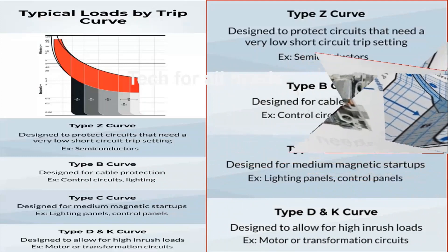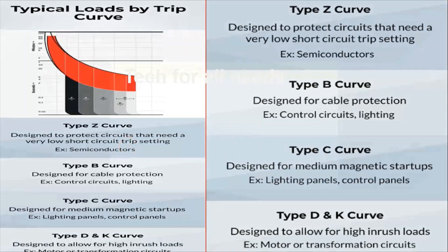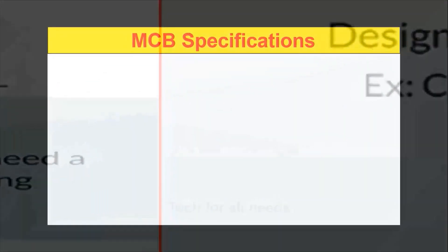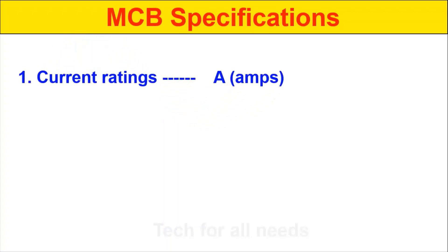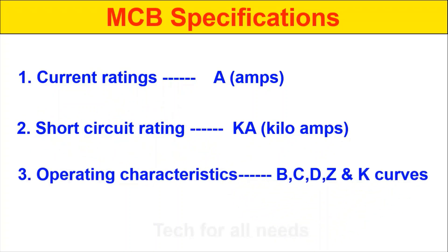Now let's see the MCB specifications. The first specification is current rating, the second is short circuit rating, and the third is operating characteristics.